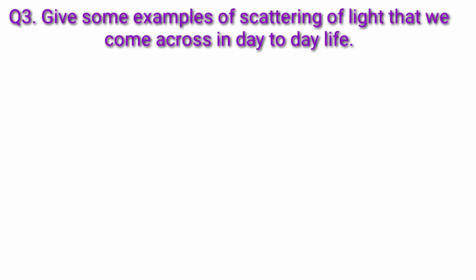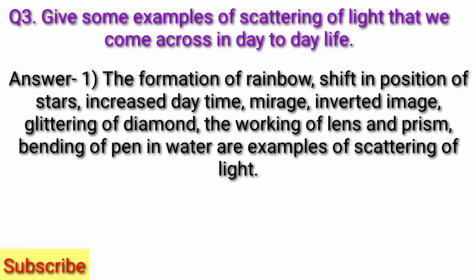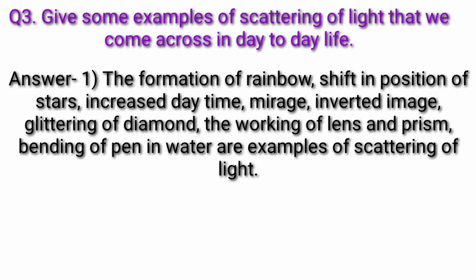Question 3: Give some examples of scattering of light that we come across in day-to-day life. Answer: The formation of rainbow, shift in position of stars, increase in day time, mirage, inverted image, glittering of diamond, the working of lens and prism, and bending of a straw in water are examples of scattering of light.